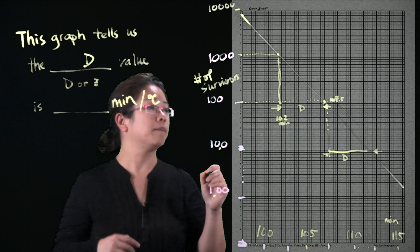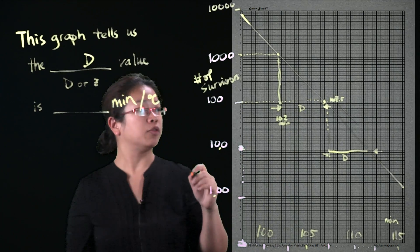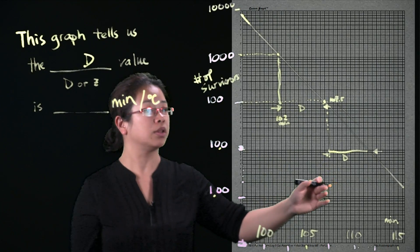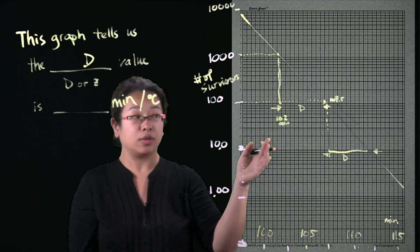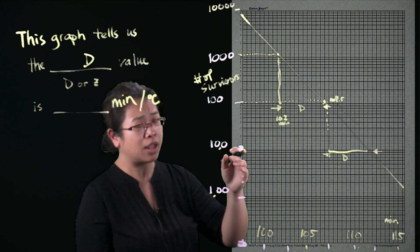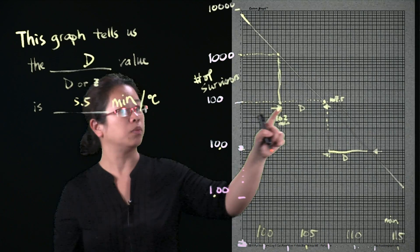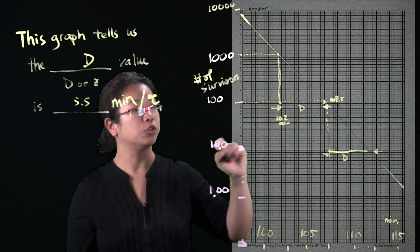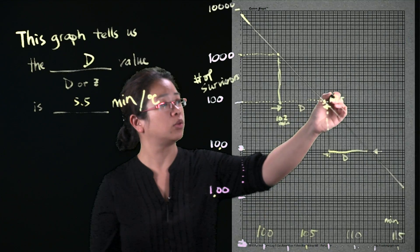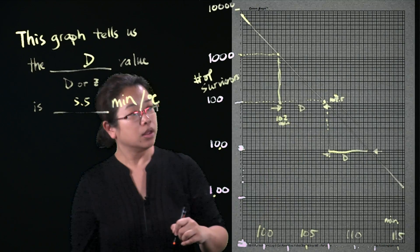So here, the D value for this microorganism for this food system at this particular temperature is 5.5 minutes. So I'm taking 107 minus 102. Oh, the seven doesn't really show up very well on the screen.